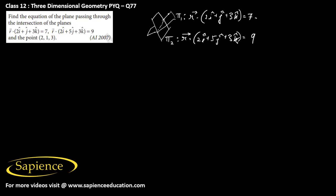We have to find the equation of the plane π3 which passes through the intersection of these two planes π1 and π2, such that it also passes through the point (2, 1, 3).